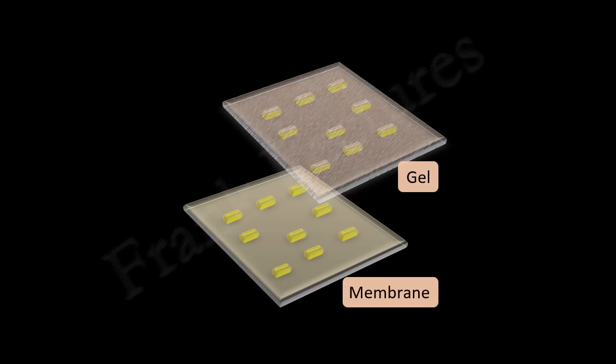Blot refers to the membrane on which biological molecules such as proteins and nucleic acids are immobilized. The process of transferring macromolecules from a gel to a membrane followed by their detection on the membrane is known as blotting.